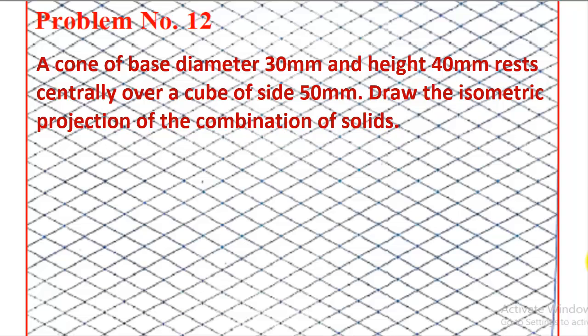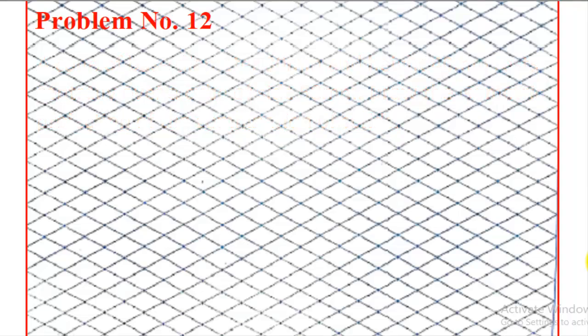So here we have two objects. One is a cone and second one is a cube. The cube dimension is 50 mm and the cone diameter 30 and height 40 mm. The bottom object is cube and the top we need to place the cone. First we will construct the bottom object, that is a cube. They gave the dimension 50.